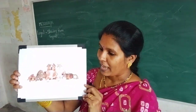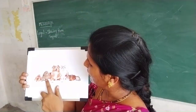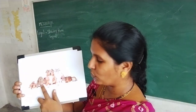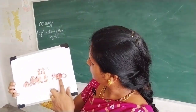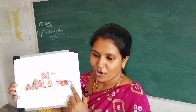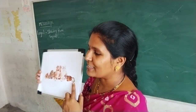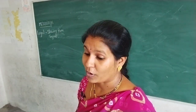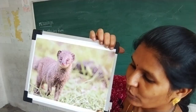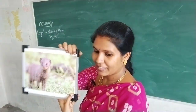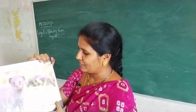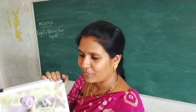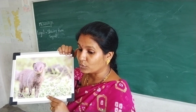Here you can see some more pet animals: tortoise, rabbit, dog, cat, rat, and frog. These are some pets. Now I will show one more pet animal to you. Look here — what is this? Can anyone say the name of this pet animal? Mongoose. Yes, very good! Give him a big round of applause. So this is called mongoose.